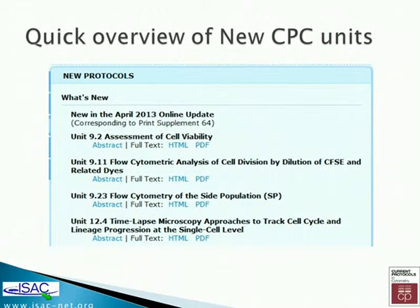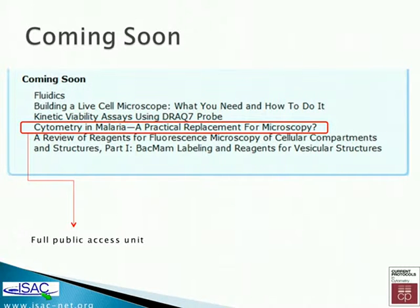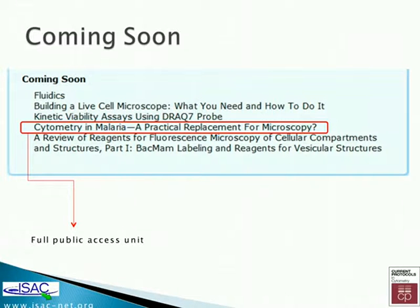We give advance warning of units coming in the next one or two updates. Some units we make publicly available — to access Current Protocols you normally need to be a subscriber, but when a unit is of particular importance we put it on the web for free. For example, there is one coming soon on cytometry in malaria as a practical replacement for microscopy, which will have full public access. You can log in to the Current Protocols website to see what's coming up.